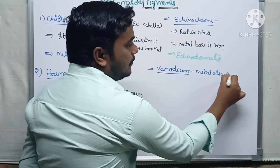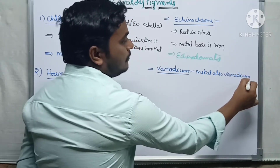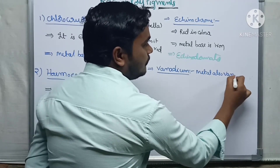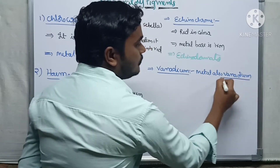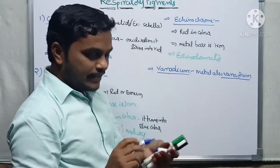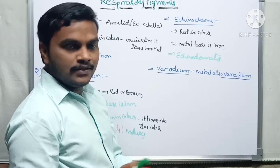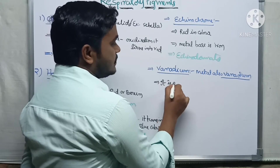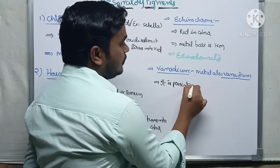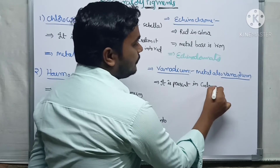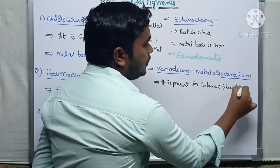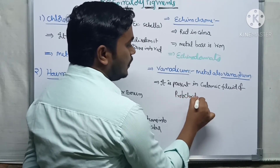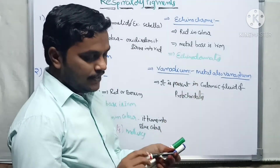Vanadium is one of the metals. There is a respiratory pigment whose metal base is vanadium. It is present in the coelomic fluid of protochordates.